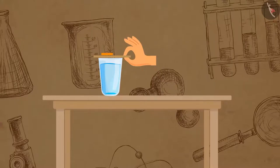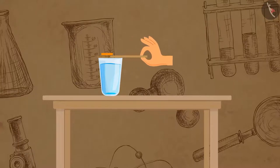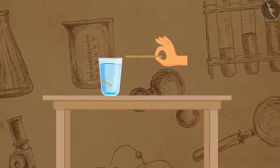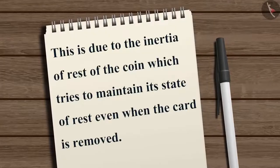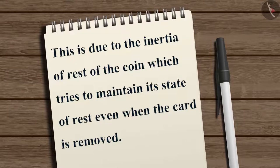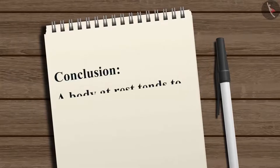But if you pull the card really fast, the coin above it will fall vertically downward in the glass instead of moving along with it. This is due to the inertia of rest of the coin, which tries to maintain its state of rest even when the card is removed. From this experiment, we can conclude that a body at rest tends to stay at rest.